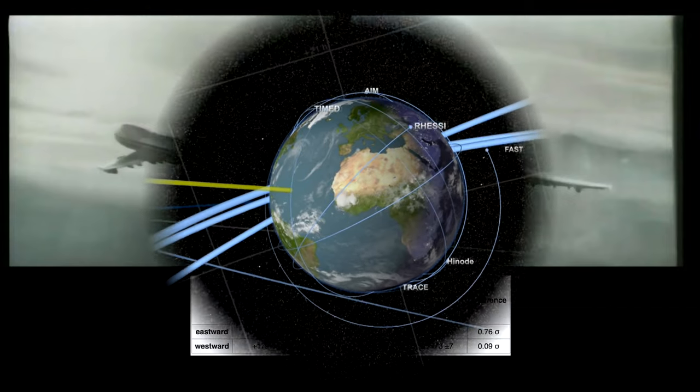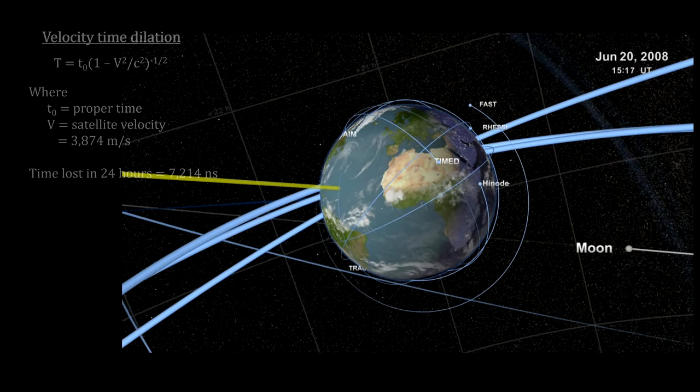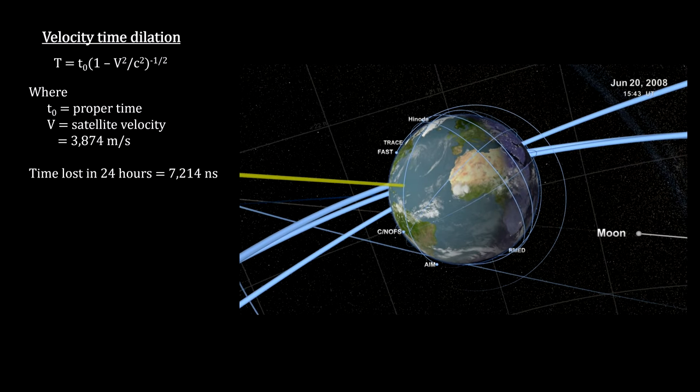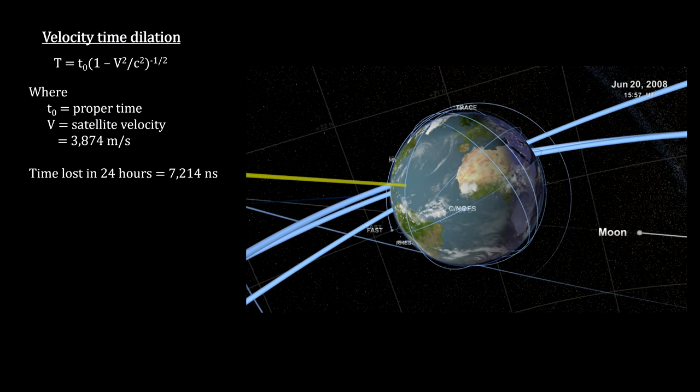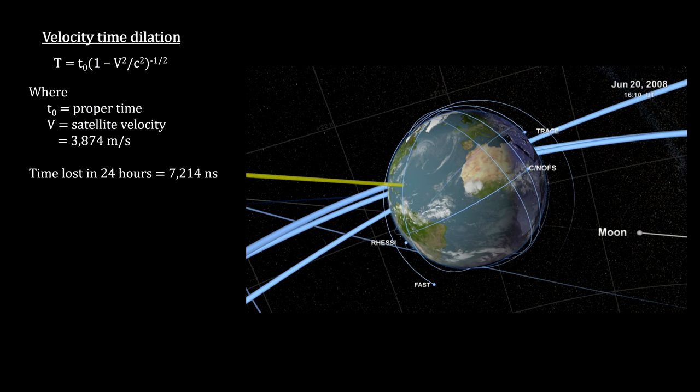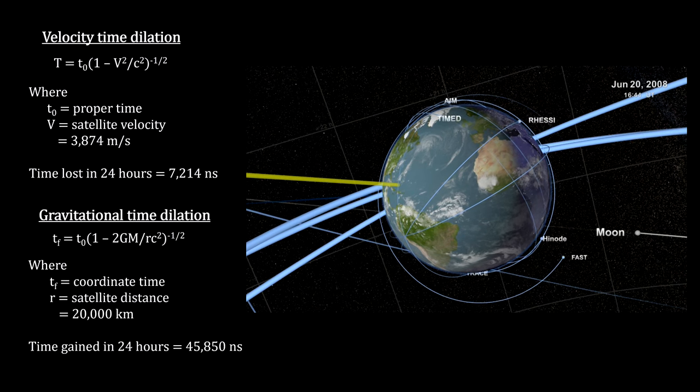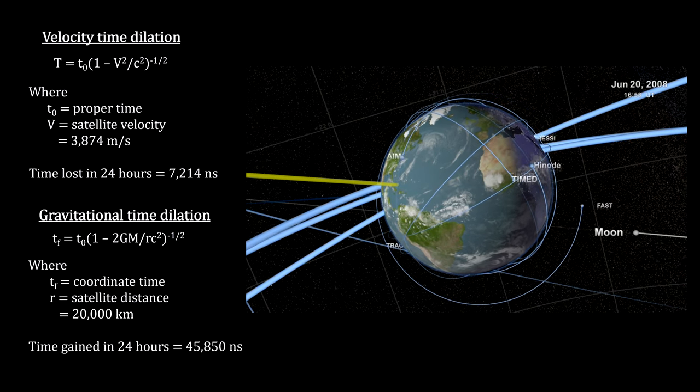Today, we see this with our GPS systems. In our segment on special relativity, we saw that time dilation, due to velocity differences, have GPS satellites losing time every day. Time that must be corrected for to get the right position on the surface of the Earth.